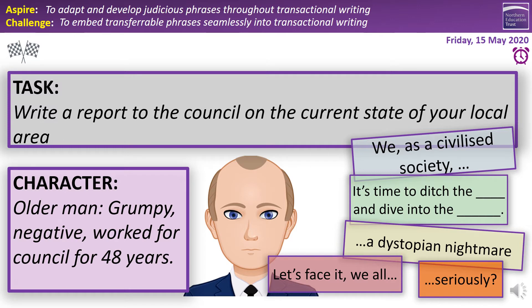We want to make sure we're bringing in this grumpy, negative vibe, particularly from his experience working with the council. He could put: 'We as a collective council' — because he's including himself — 'should be prioritizing the state of our once beautiful and magnificent landscape.' Then: 'Let's face it, we all cut corners now and again as council workers. However, you have not just cut corners — you've created a dystopian nightmare.' Again, we can adapt and add phrases together. Hopefully the ones you've got make sense and you're proud of them.